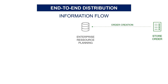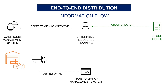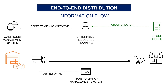Everything starts with a store replenishment order created by the distribution planner to replenish a store. This order is created in the ERP, then transmitted to the warehouse management system. The order is then prepared and packed by the warehouse team, waiting for shipment. As soon as the goods are loaded, the shipments are tracked by the TMS until store delivery.